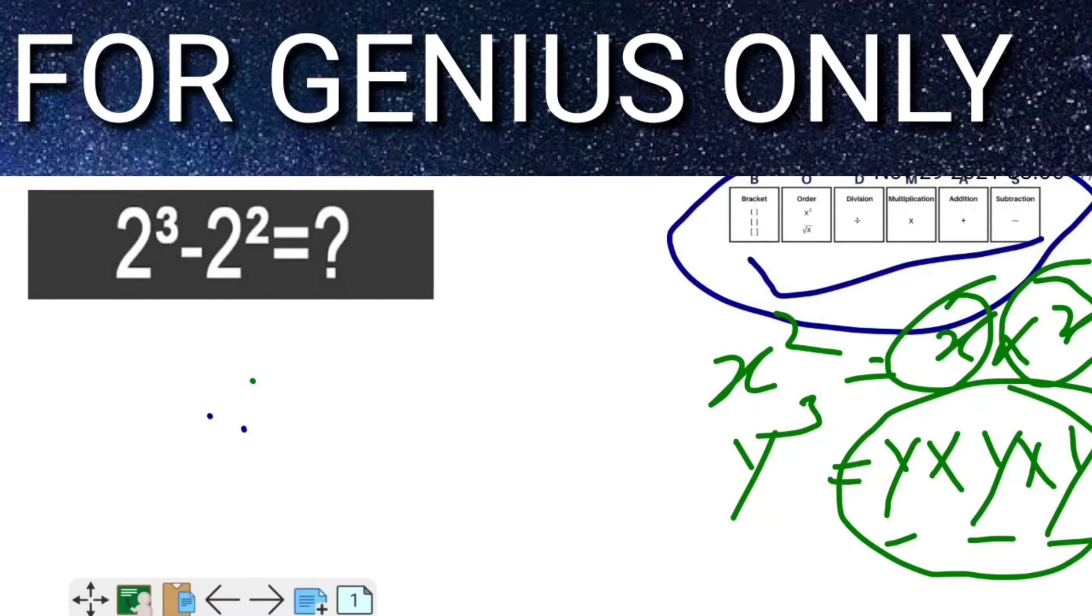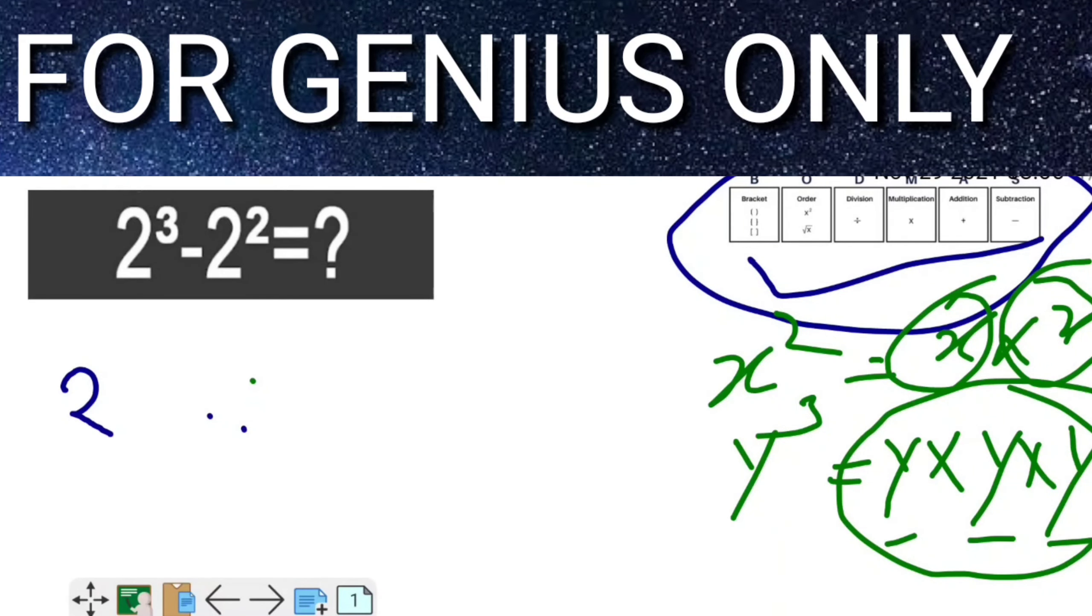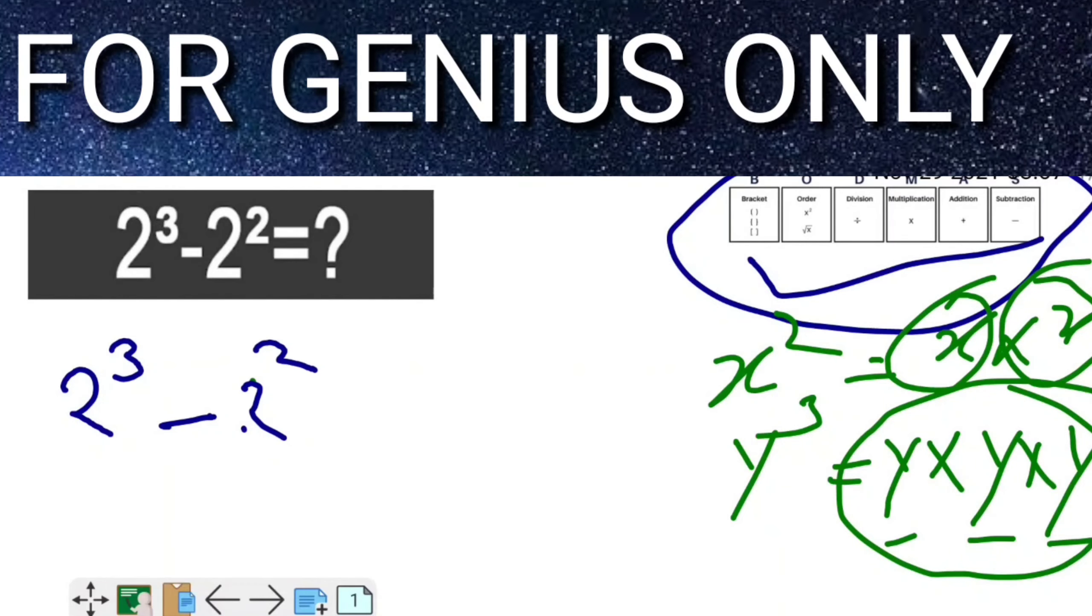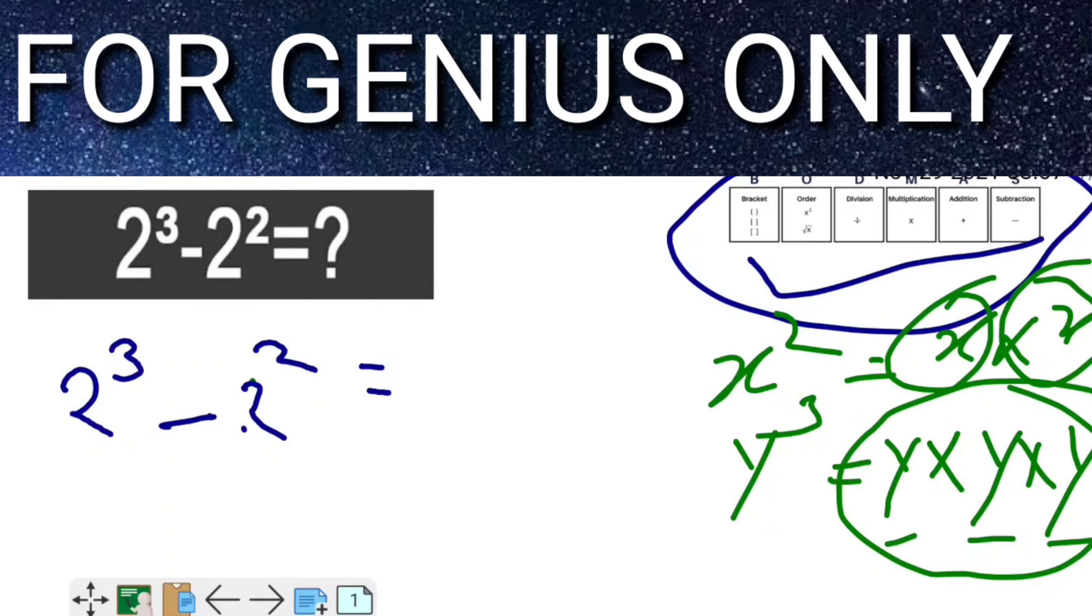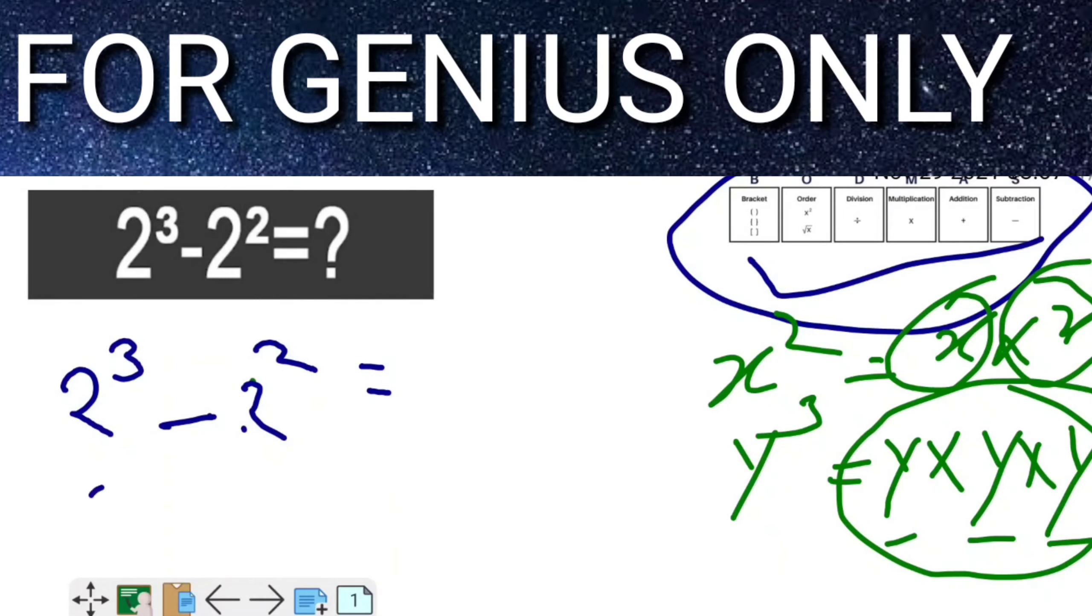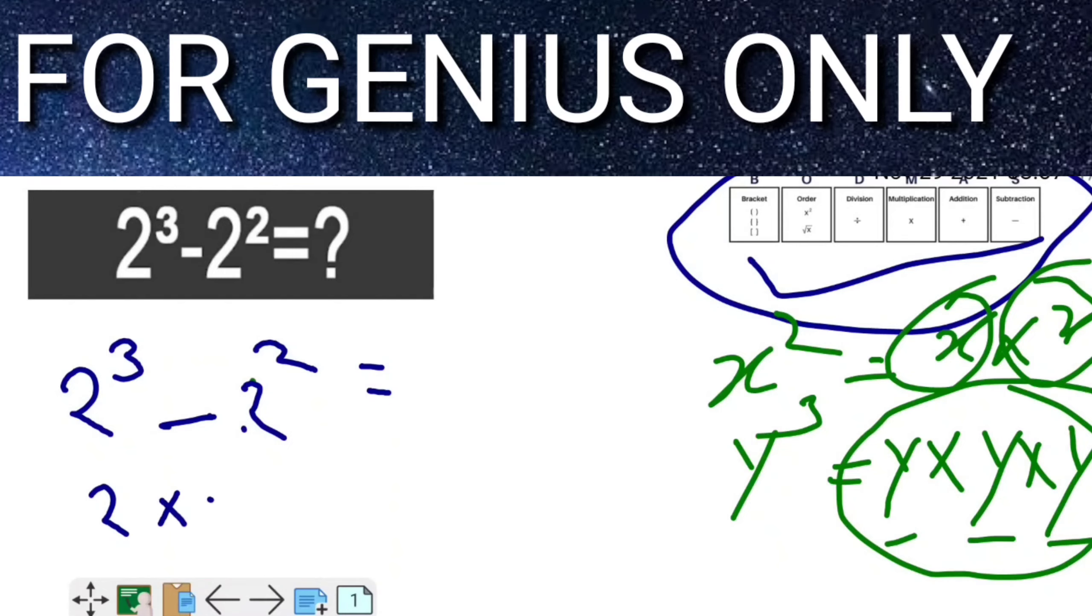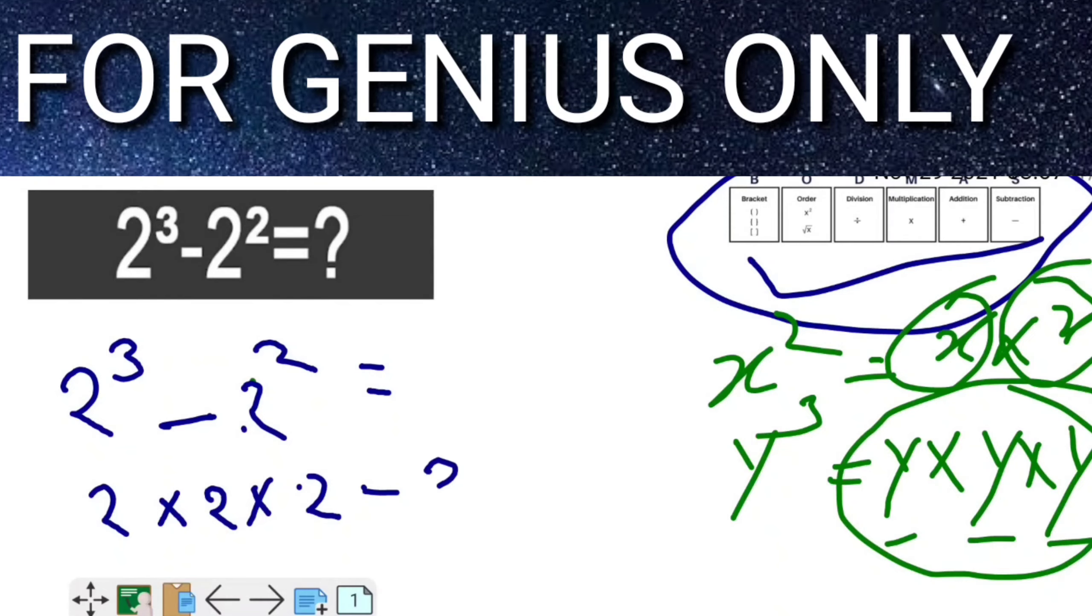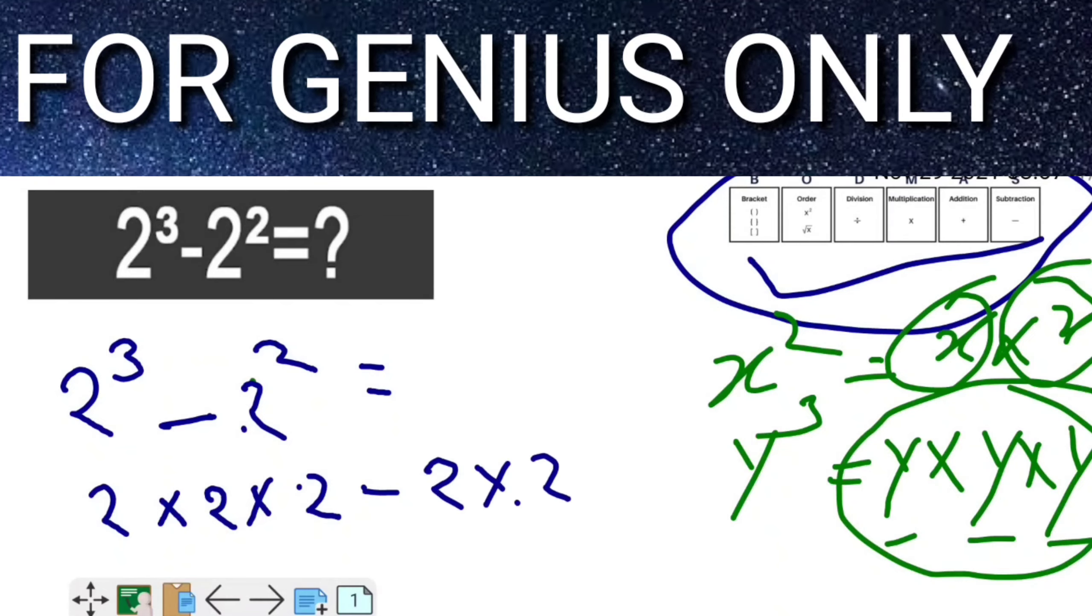Now friends, watch here. We have 2³ and 2². You can see 2 × 2 × 2 minus 2 × 2. Very simple steps we're following because not everyone is a genius in this world.